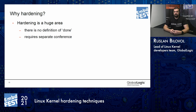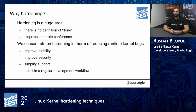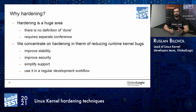The issue with hardening, security, and bugs is that there is no definition of done. You cannot say that your system is secure, there are no bugs, et cetera. You can spend your whole life fixing bugs and securing your system and it still may not be secure. So that requires a separate conference to cover everything. What we'll try to do and learn in this presentation: we'll try to reduce the number of runtime kernel bugs, which will definitely improve stability and security, reduce the time of bug fixing. And you can use it in your regular development workflow — when you develop a driver or some feature to the Linux kernel, you can run all those sanitizers and features from the Linux kernel that we will talk about, and you can bring your driver to a better state.